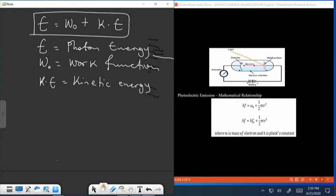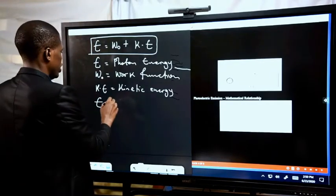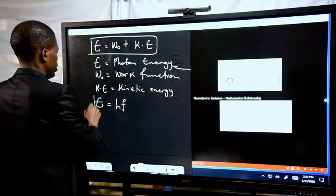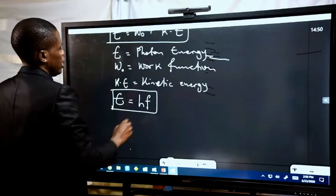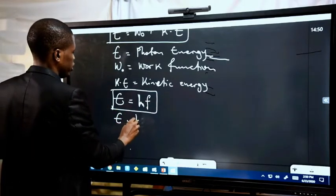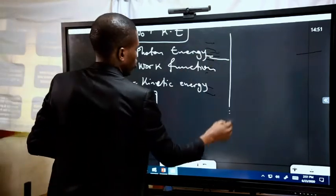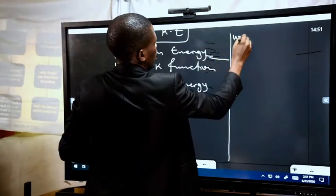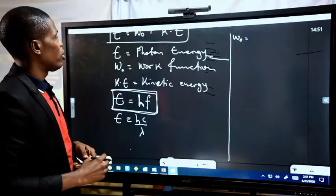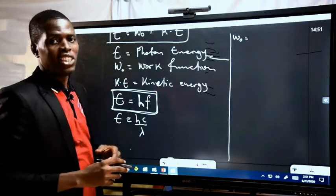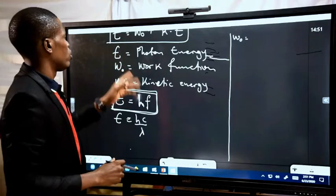Considering this equation, we recall from our previous analysis that E = HF, and E is also equal to HC over lambda. We can also consider the work function W₀ as the minimum amount of energy required for an electron to be liberated when the incident light overcomes this energy — that is the work function.